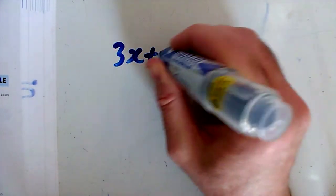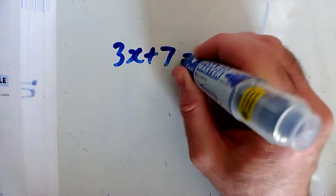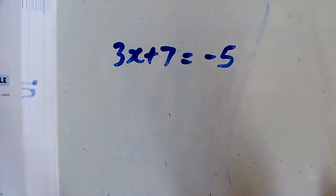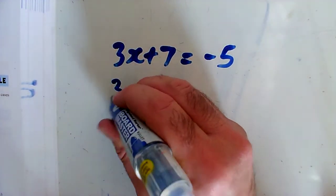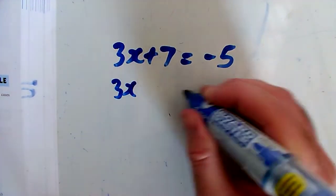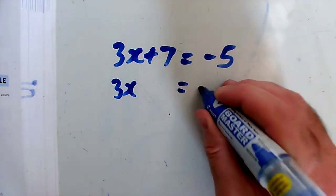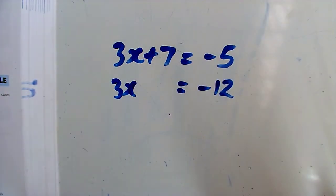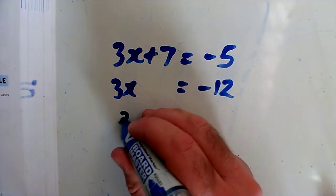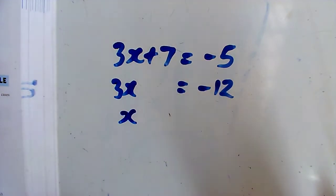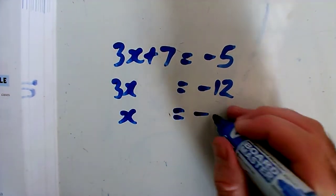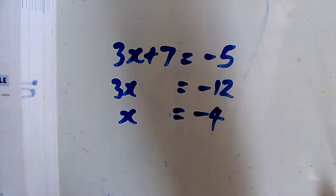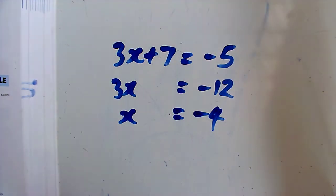Question H: 3x plus 7 equals minus 5. I'm going to take away 7 from both sides to get the 3x bit on its own. Taking away 7, 3x equals minus 12. Then dividing both sides by 3 to get x on its own, x equals minus 4.